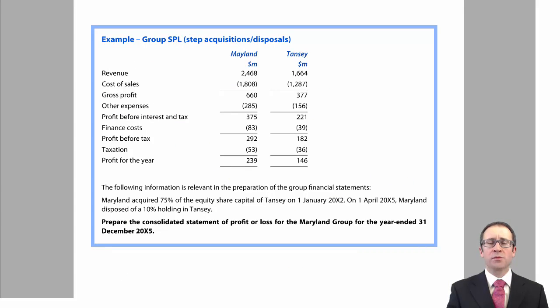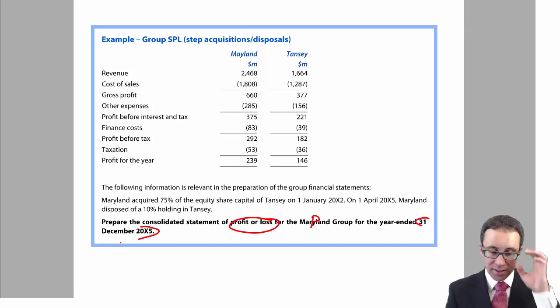Let's have a look at a big group statement of profits or loss question that involves either a step acquisition or a step disposal. It says to prepare the statement of profits or loss for the Maryland group for the year ended December X5. Maryland acquired 75% of the equity share capital of Tansy on the 1st of Jan X2. So several years ago, we gained control with a 75% holding. So that will be a 75% holding at the start of the year and a 25% NCI.